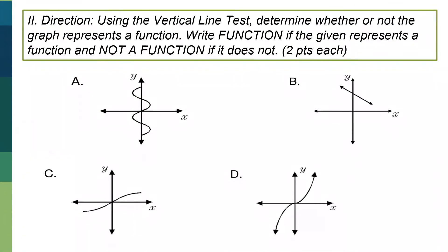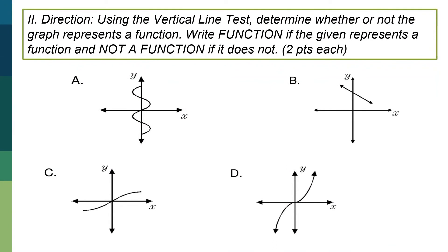In test number 2, using the vertical line test, determine whether or not the graph represents a function. Write function, if the given represents a function, and not a function, if it does not. This is equivalent to 2 points each.